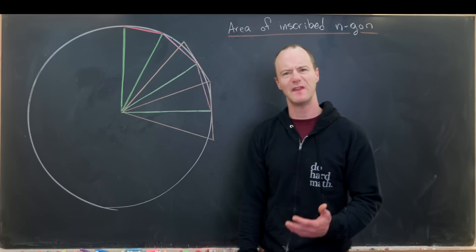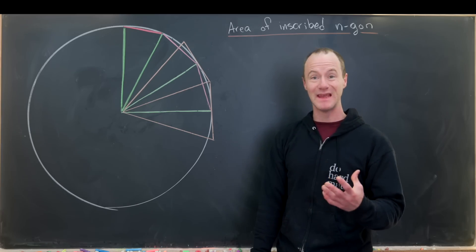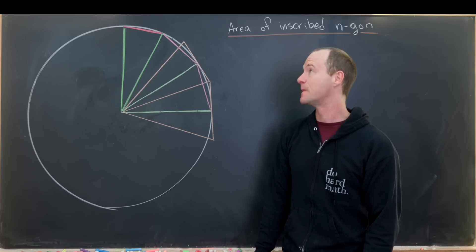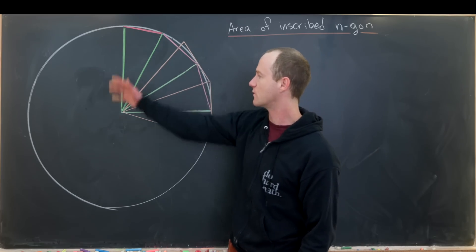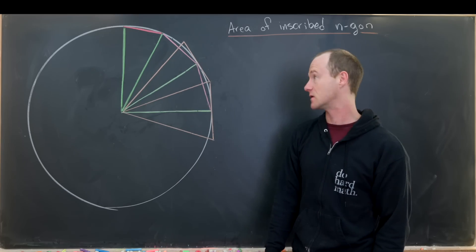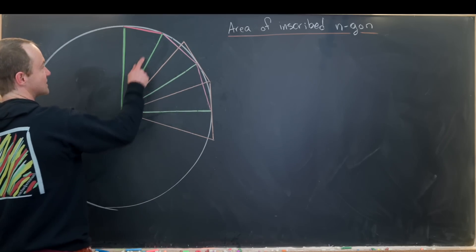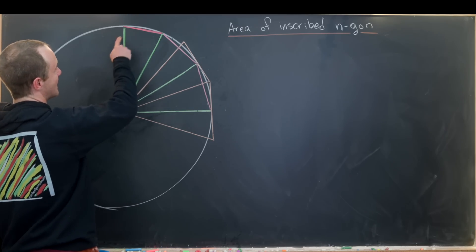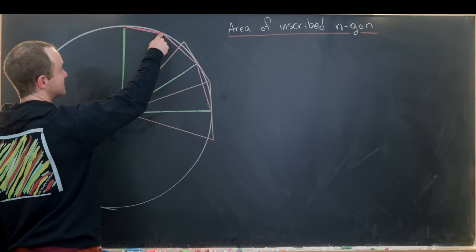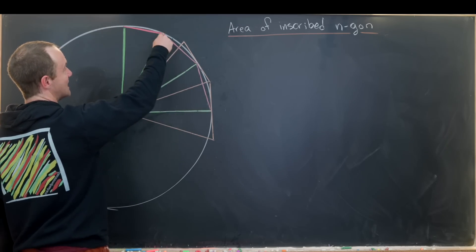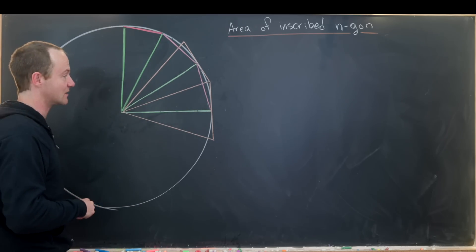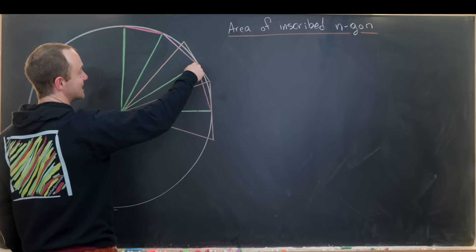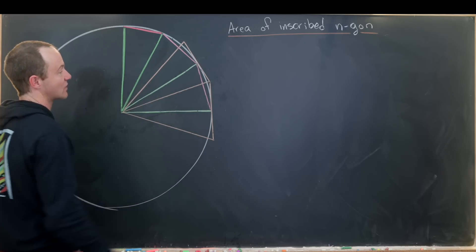Today we're going to derive a very classic geometry problem: the area of a circle. We're going to do that by pinning a circle between an inscribed n-gon — a regular polygon with n sides — and a circumscribed n-gon. The inscribed n-gon is totally within our circle with its vertices along the edge, while the circumscribed n-gon has edges tangent to the circle so the circle is completely contained within it.